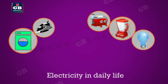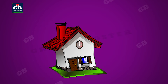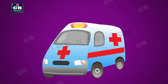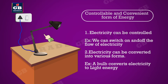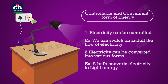Electricity is an inevitable part of our lives. It has a variety of uses in homes, schools, hospitals, industries, and so on. It is a controllable and convenient form of energy — that means we can make the electricity flow in a desired path, in a desired direction, and in a required quantity. To understand this, we need to know answers to certain questions.